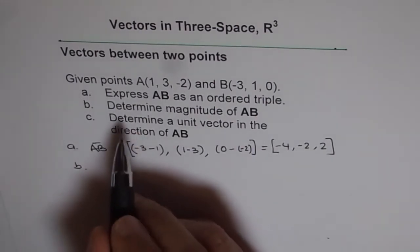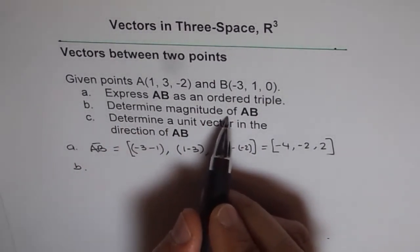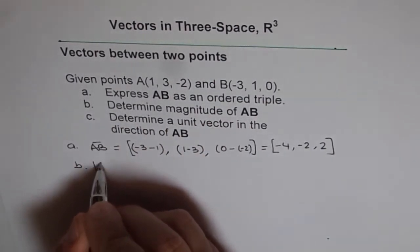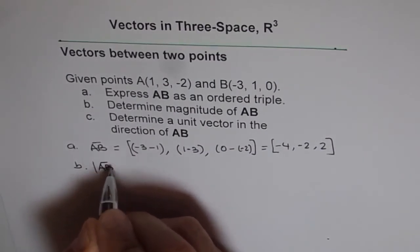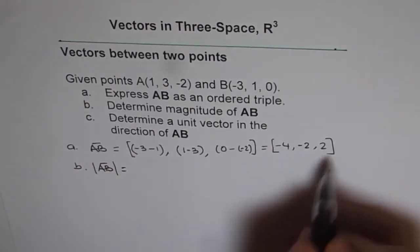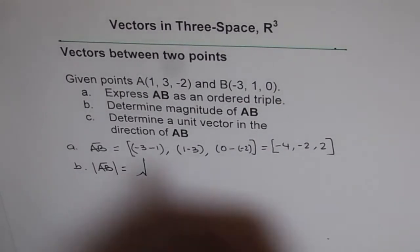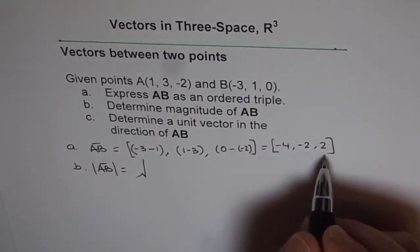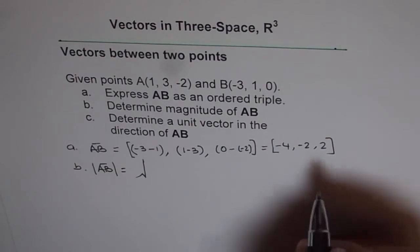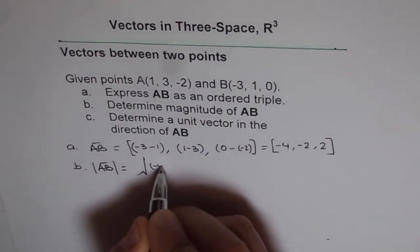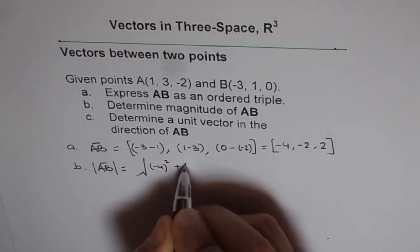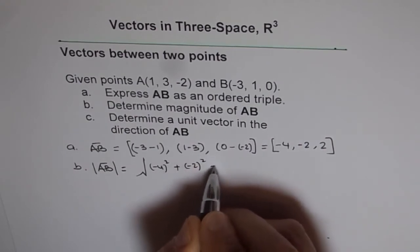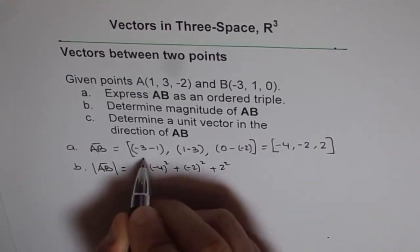Now for part B, determine magnitude of vector AB. The magnitude of vector AB is from this vector, we square all these direction numbers, add them up, and do the square root. So we get minus 4 square, plus minus 2 square, plus 2 square, square root.